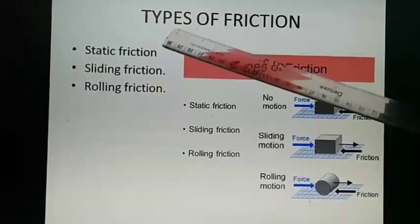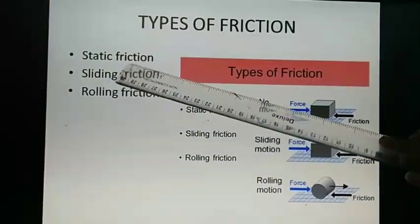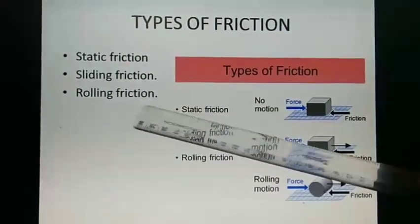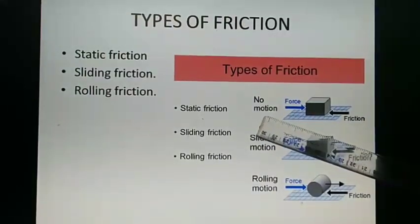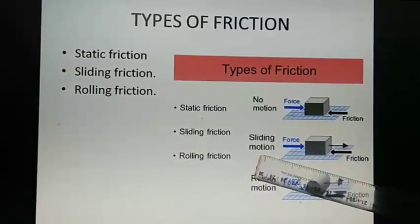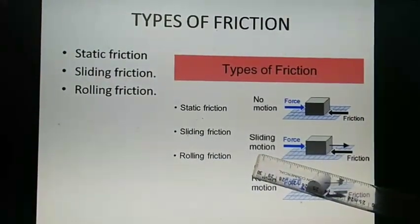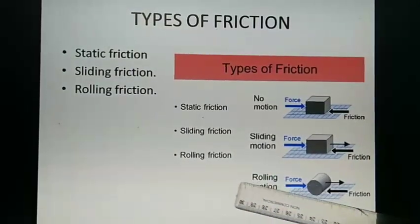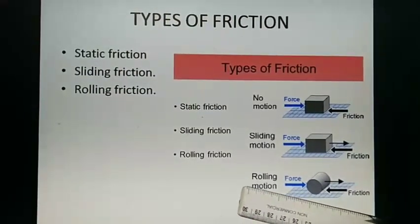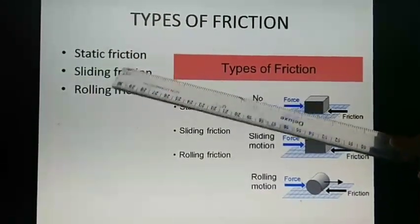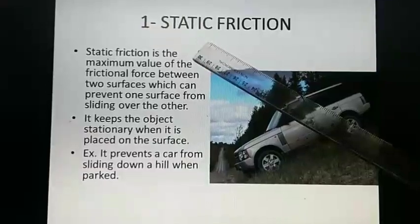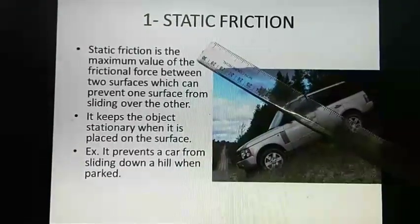The next topic is types of friction. There are three types of friction: static friction, sliding friction, and rolling friction. In static friction there will be no movement of an object. In sliding friction the object slides on a surface. In rolling friction the object rolls on a surface.